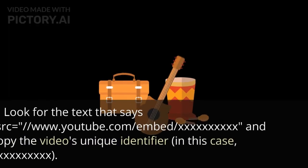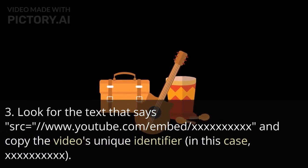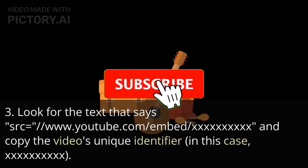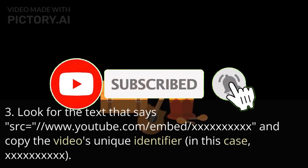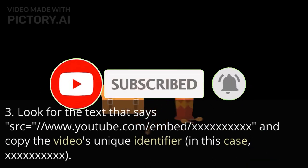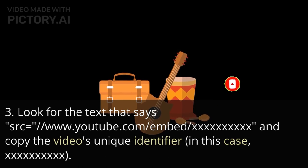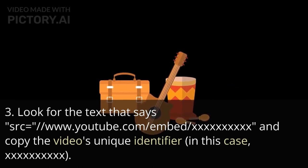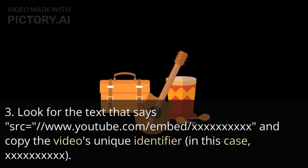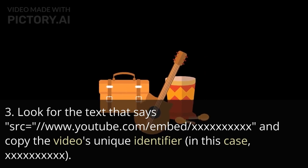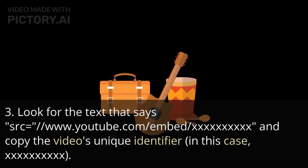Look for the text that says src equals www.youtube.com/embed/xxxxxxxxxx and copy the video's unique identifier — in this case, the string of characters after the final slash.